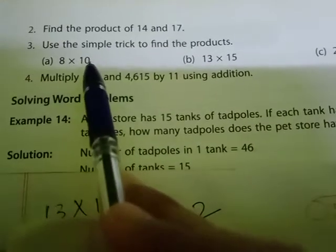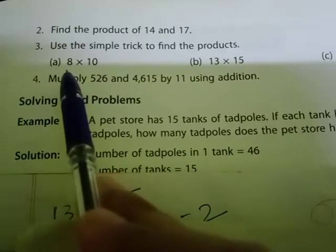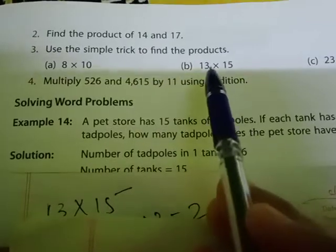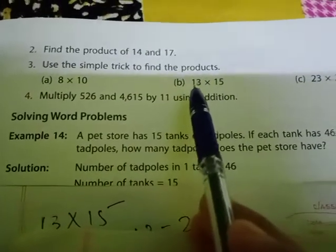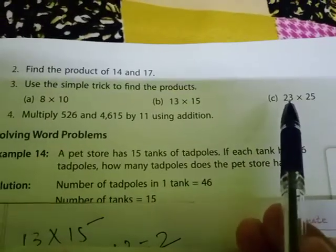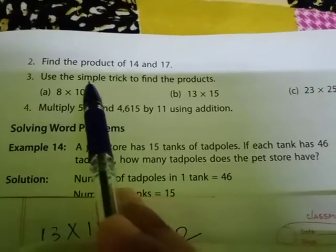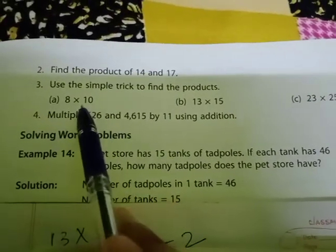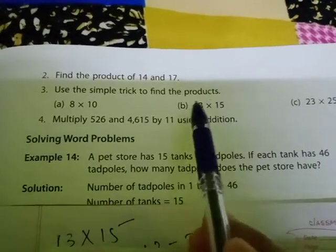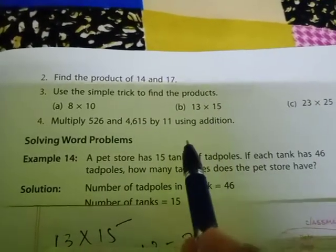10 minus 8 is 2, 15 minus 13 is also 2, then 25 minus 23 is also 2. So whenever we follow this trick, the given numbers should have a difference of 2 between them.